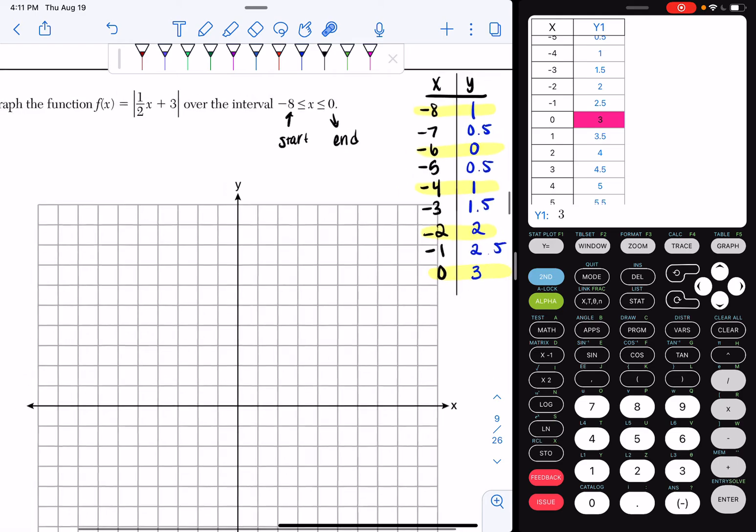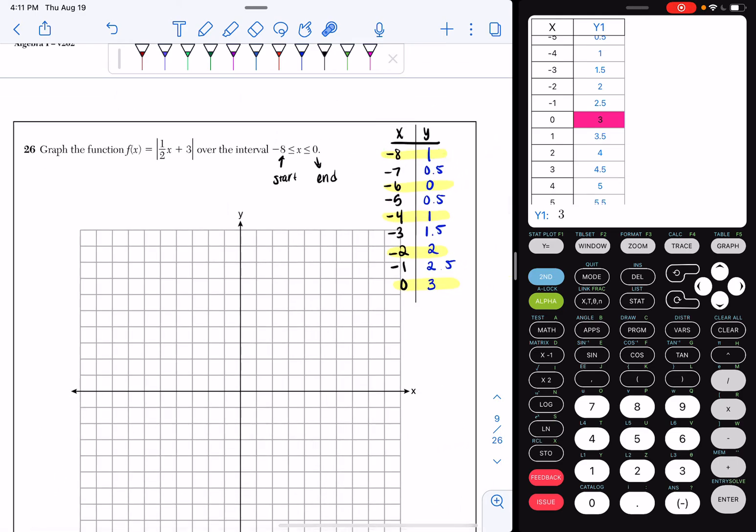So to plot my points, I go out 8 and up 1. So I go out 8, so 1, 2, 3, 4, 5, 6, 7, 8, and I go up 1 and I plot a point right here.